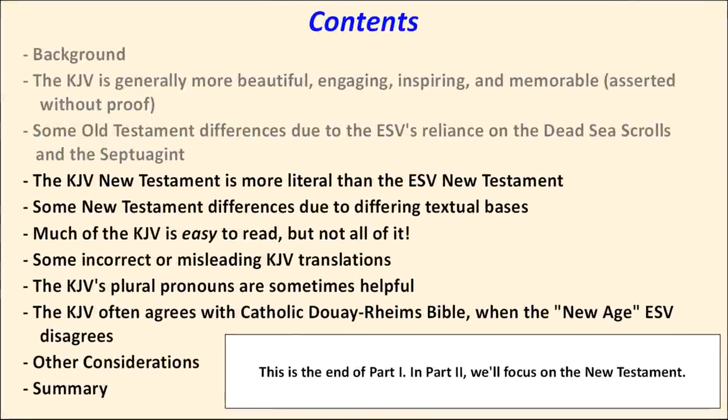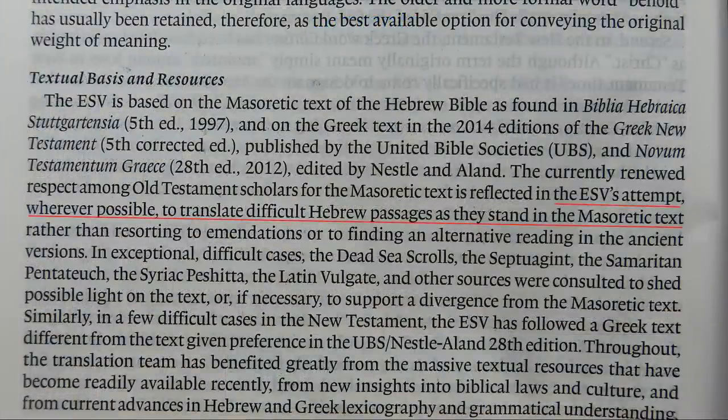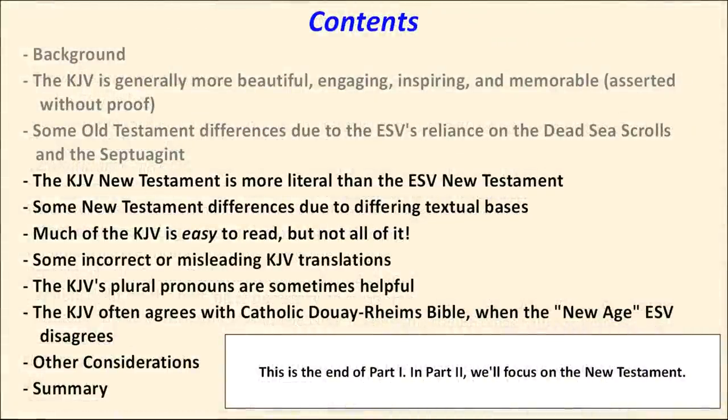Although the preface to the ESV states that it attempts, "wherever possible, to translate difficult Hebrew passages as they stand in the Masoretic text, rather than resorting to emendations or to finding an alternate reading in the ancient versions," they appear to have done so more frequently than that rule requires. Not that I mind. In my opinion, the Septuagint — which was the Bible received by the early Church for about four centuries until the time of Jerome, and often endorsed by the New Testament authors under the inspiration of the Holy Spirit — hasn't gotten the respect it deserves. This is particularly so now that alignments between the Dead Sea Scrolls and the Septuagint show how the Septuagint preserves ancient readings. We'll end part one here. Part two will focus on the New Testament, beginning with an assessment of the KJV and ESV in terms of literalness.